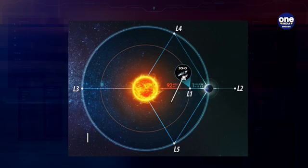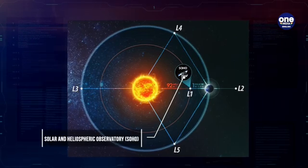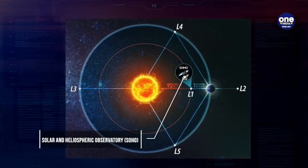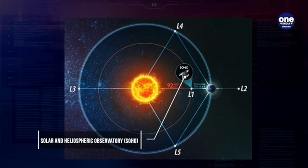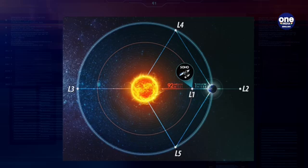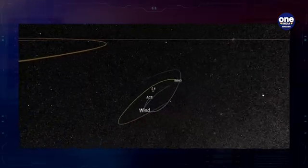For example, the Solar and Heliospheric Observatory, SOHO, has been positioned near L1 to have a continuous view of the Sun or the cosmos without being affected by Earth's atmosphere or the day-night cycle. Using the special vantage point L1,